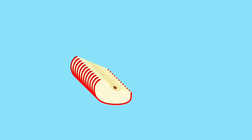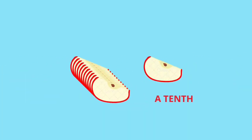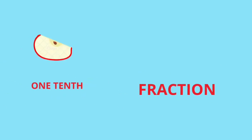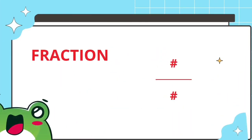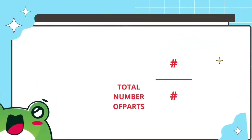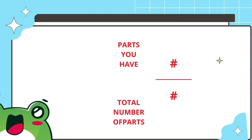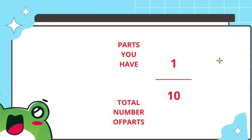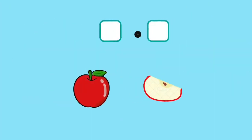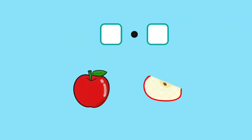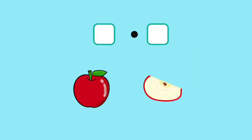The amount that's ten times smaller than one is called a tenth. It's the amount you get if you take one whole — like one apple — and divide it into ten equal parts, keeping just one of them. One tenth is what we call a fraction, and fractions are written using a special notation with two numbers and a line in between. The number on the bottom tells us how many equal parts a whole is divided into, and the top number tells you how many of those parts you have. So the fraction one tenth is written as one over ten.